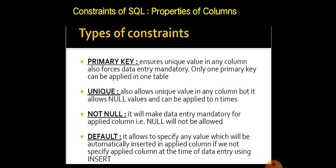The next constraint is UNIQUE — it also allows unique values in any column but it allows null values as well. It will check only whether the value is unique or not, and we can also give null values. But the primary key won't allow null values, whereas UNIQUE will allow null values. Then NOT NULL — it will make data entry mandatory for the applied column, meaning null will not be allowed. If we try to give a null value into a column which has the NOT NULL constraint, the compiler won't allow us to enter it. The speciality of NOT NULL is that it allows duplicate values — it only disallows null values.